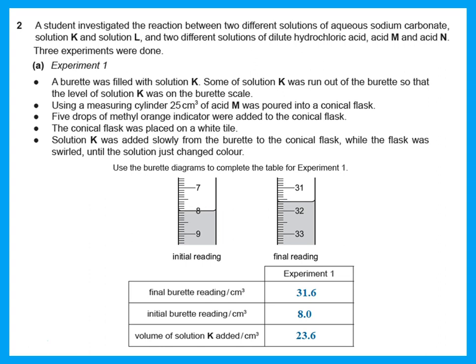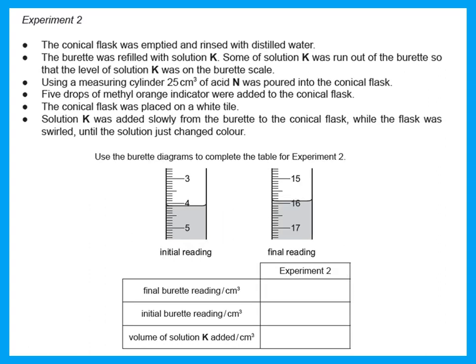Do not write the final and initial readings in the wrong places. The final reading is 31.6 and the initial is 8.0, so the difference — the volume used — is 23.6 cm³.